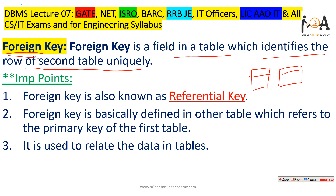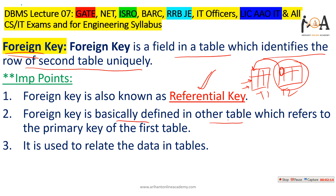The definition says: a foreign key is a field in a table which identifies the row of a second table uniquely. If this is table one and this is table two, this key — the foreign key — will identify each and every row of the second table. Foreign key is also known as referential key because it is referencing another table. Foreign key is defined in another table which refers to the primary key of the first table.